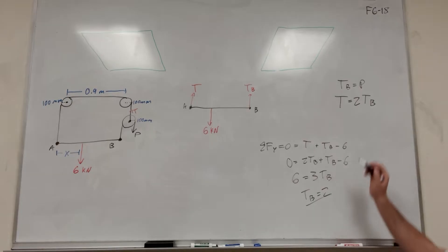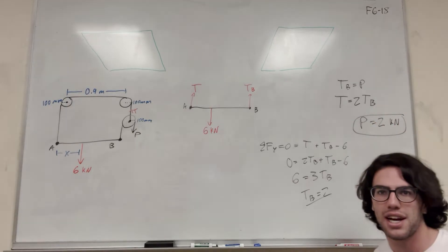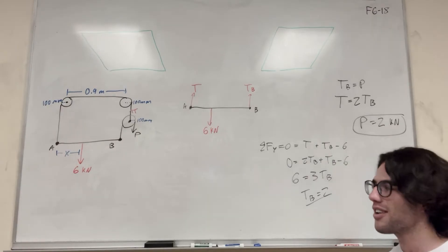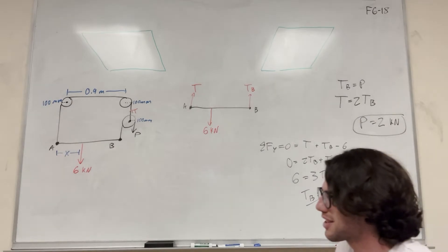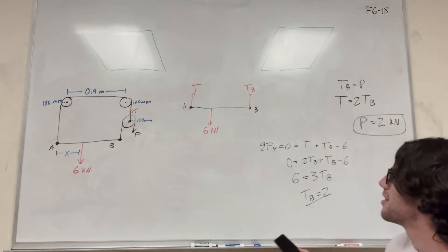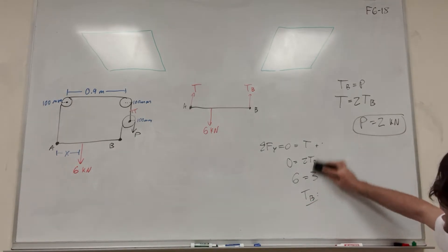So if tension of B is equal to 2 and tension of B is equal to P, then we found out that P is equal to 2 kilonewtons. So yeah, that is a little confusing. Hopefully that makes sense to you all. It's basically, it's confusing. But yeah, hopefully you need to use that with it. So let's go ahead and get rid of this now.